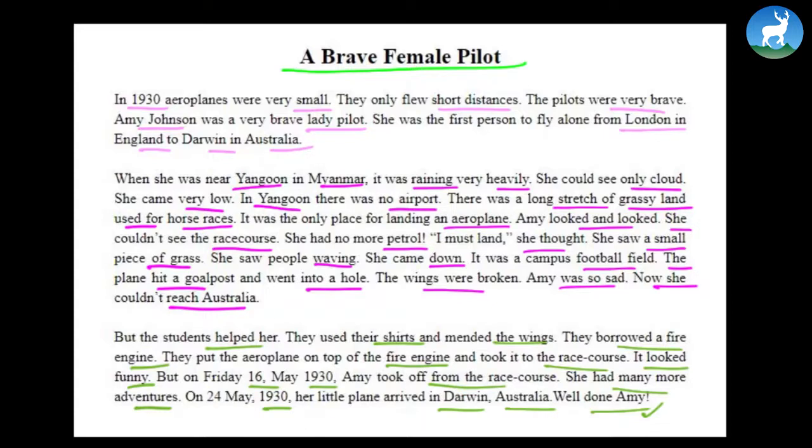It's about a brave female pilot who could fly to Darwin, Australia, although she was forced to land in Yangon because she had no more petrol. She landed there in the race course and the aeroplane was heavily damaged. But the students from Yangon really helped her mend the aeroplane and finally she could fly and go back to Australia. So it's a little bit of a journey that she took.